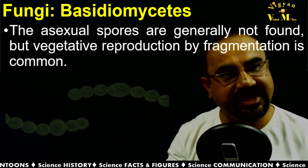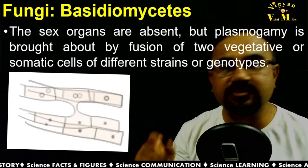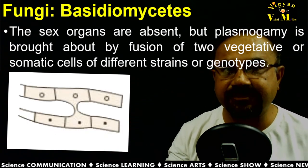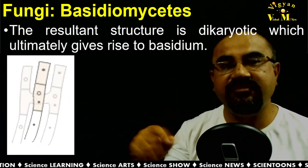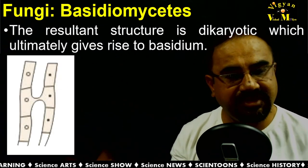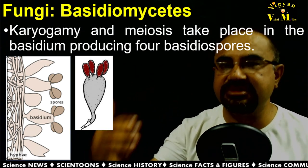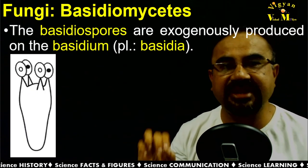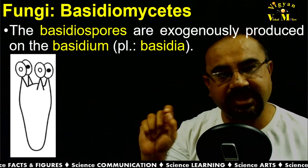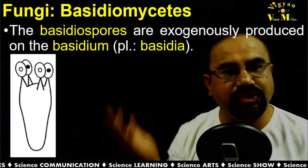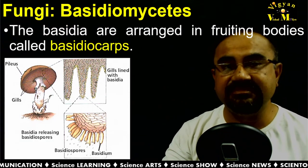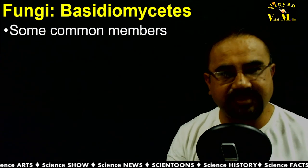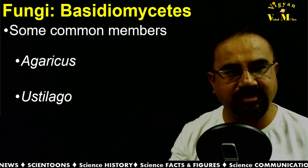Sex organs are absent in Basidiomycetes, but plasmogamy occurs through fusion of two vegetative somatic cells of different strains or genotypes. This results in a dikaryotic structure that ultimately gives rise to the basidium. Inside the basidium, karyogamy and meiosis take place. Basidiospores are exogenously produced on the basidium — four per basidium. The basidia are arranged in a fruiting body called basidiocarp.